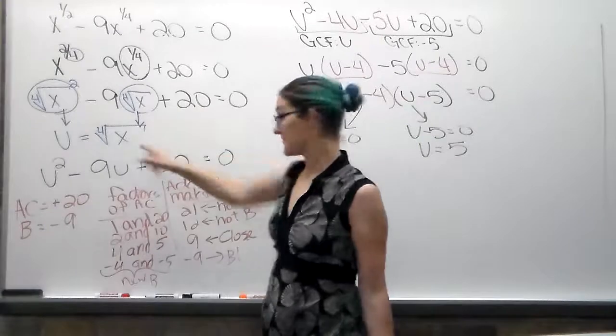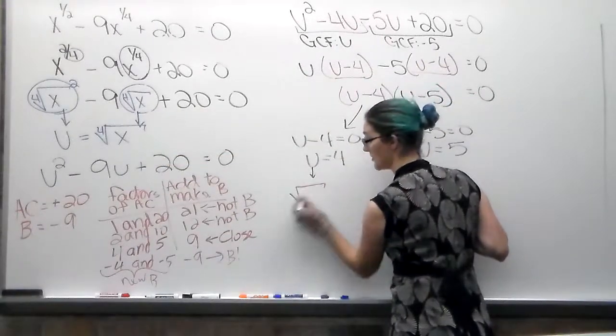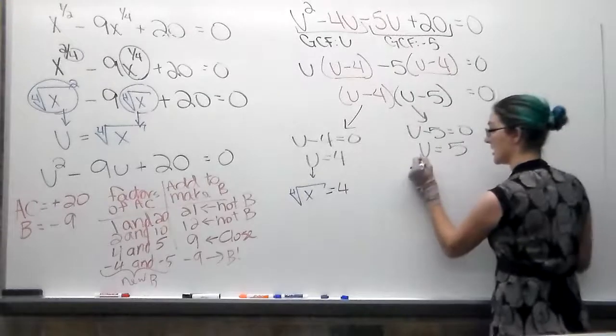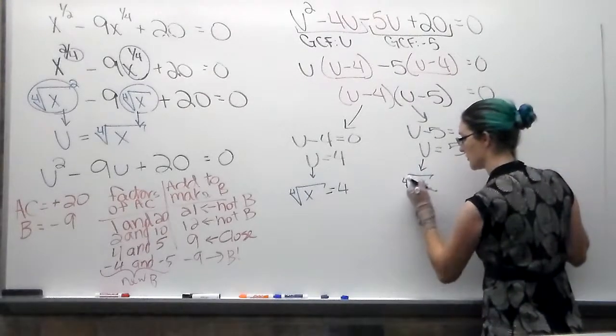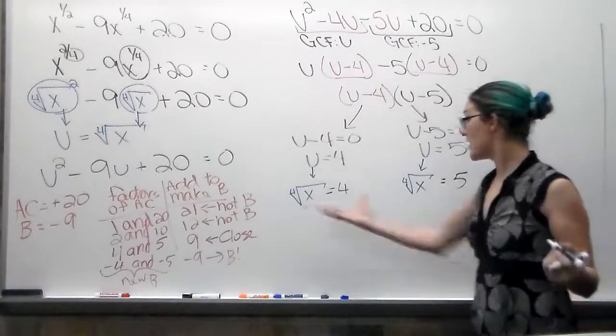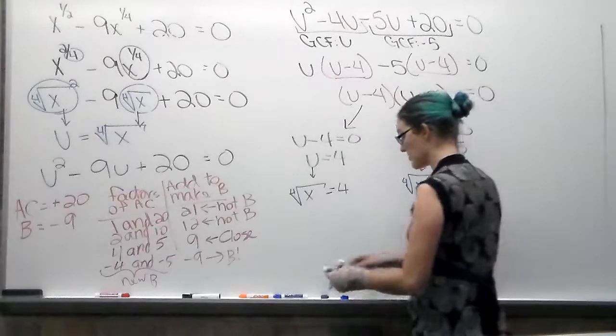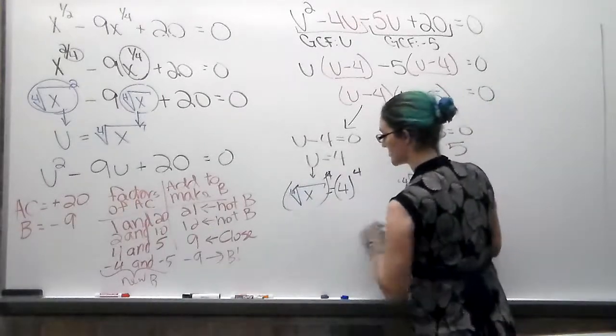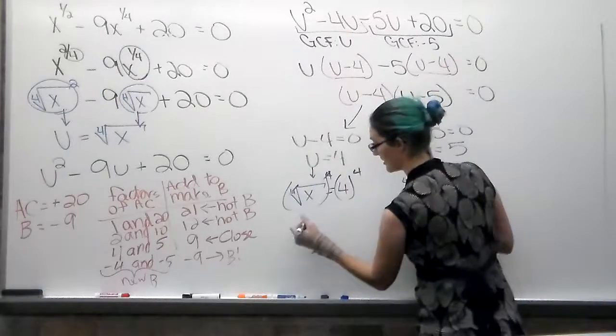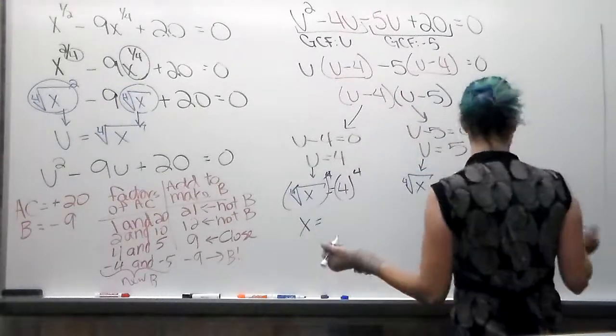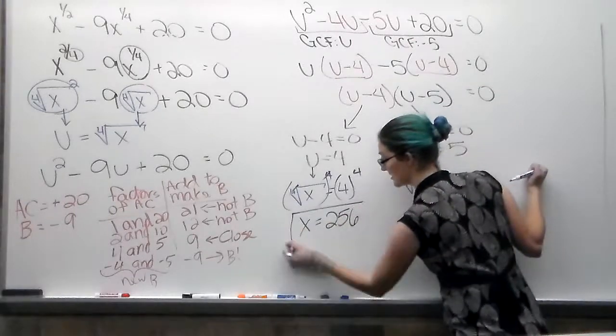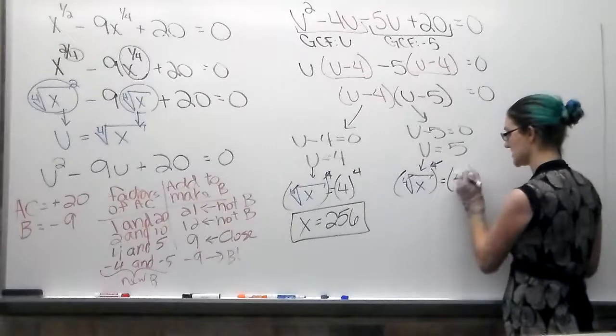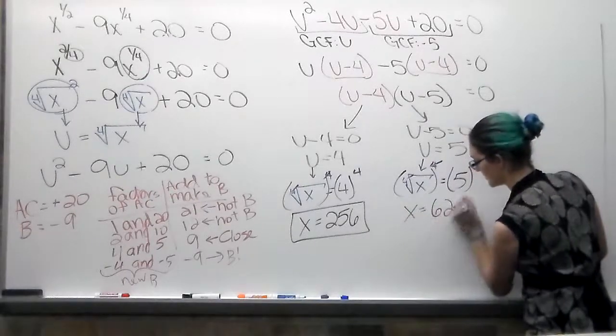So we're going to come back here and say, okay, what was u? u was the fourth root of x. So I'm going to come over here and instead of u, I'm going to put the fourth root of x. Over here, instead of u, I'm going to put the fourth root of x. And then you solve. To get rid of a fourth root, you use the fourth power. So I'm going to solve in purple. What you do to one side, you must do to the other. These go away. You are left with x equal - you can do 4 to the fourth power in your calculator. It is 256. That is now an x. Over here, to get rid of a fourth root, you use a fourth exponent. x equals 625.